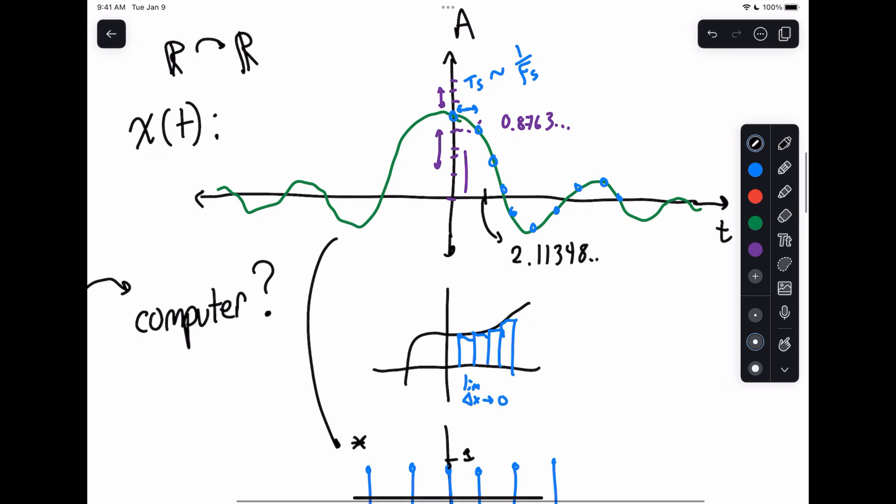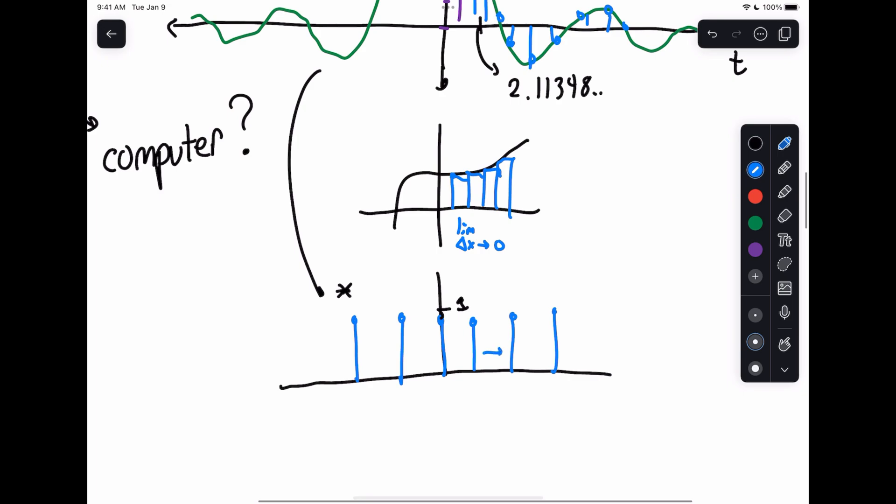When we multiply this signal, because these are heights of one, we end up getting a scaled version of these pulses that are all scaled by the value of this function at each sample point. Once again, here we have our sampling interval, our sampling period, and then that's related to the sampling rate.